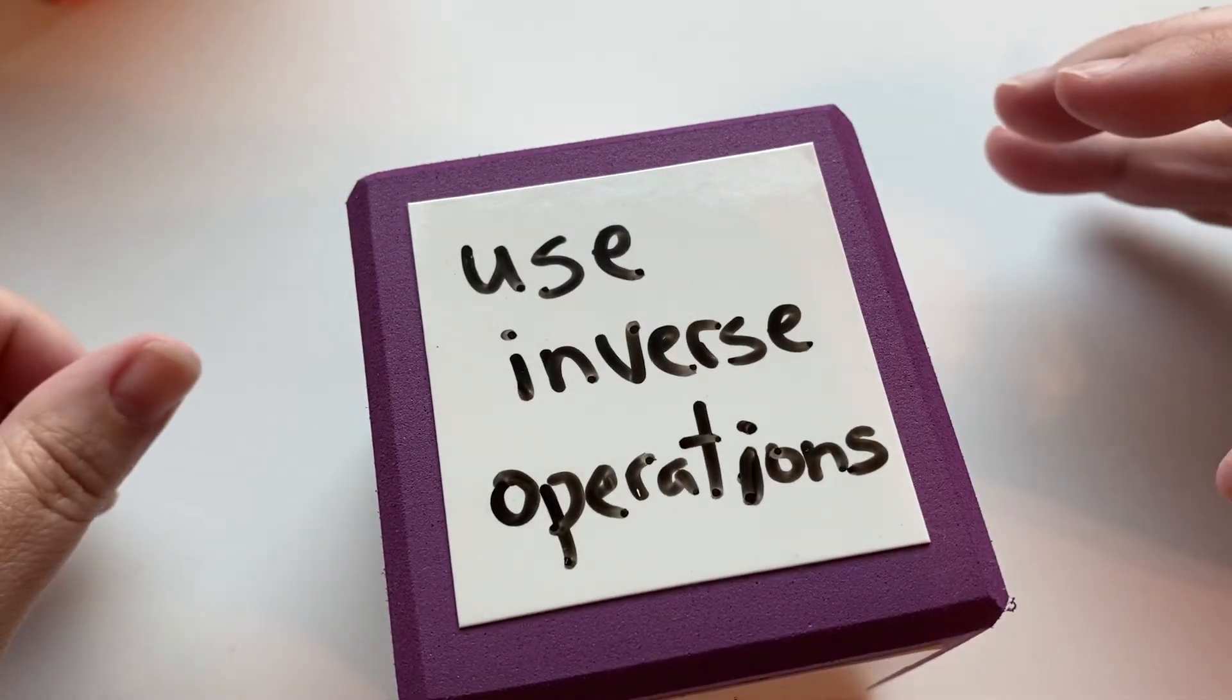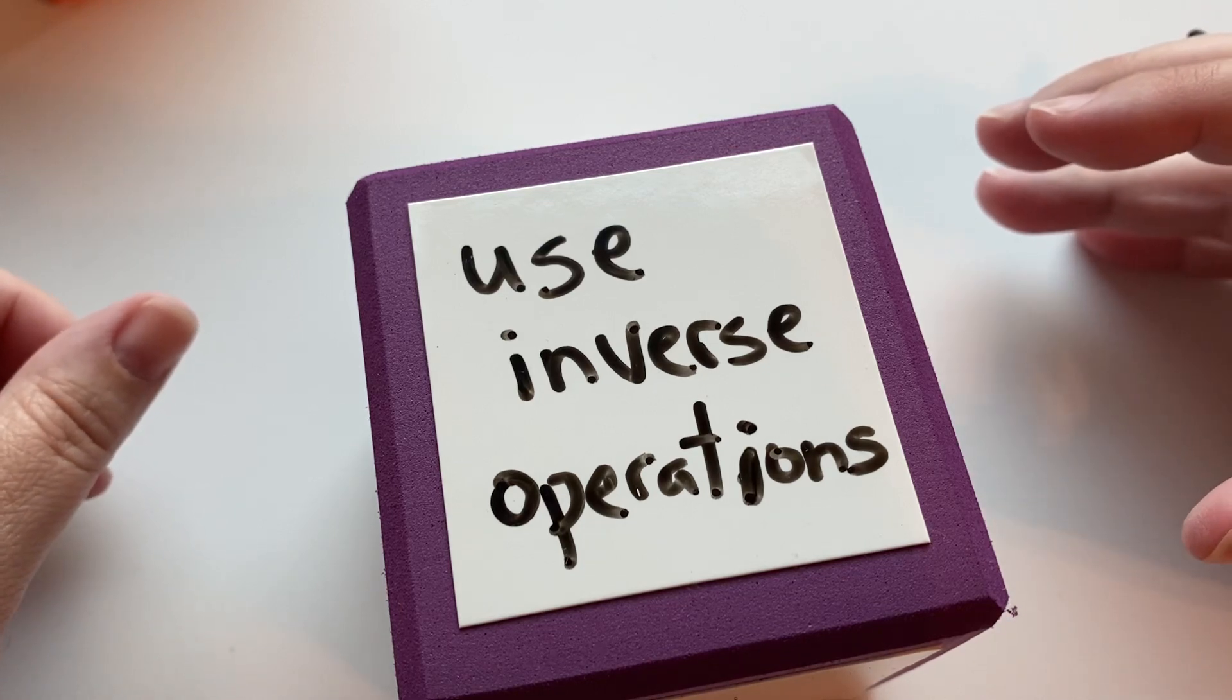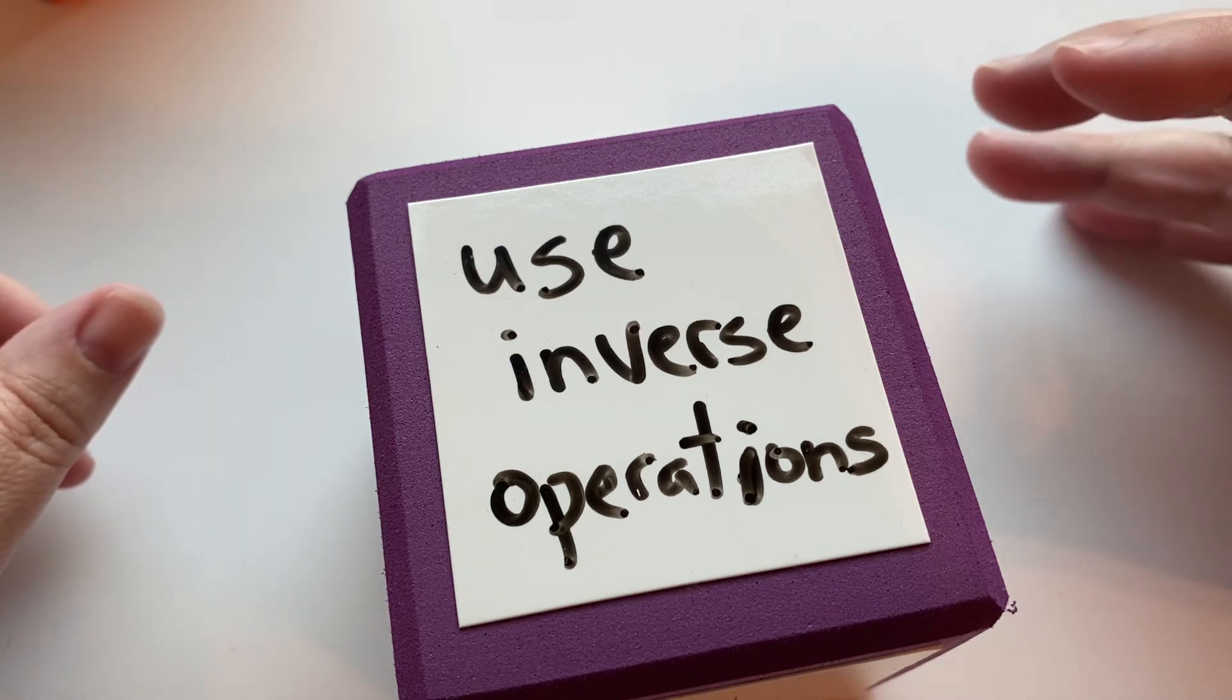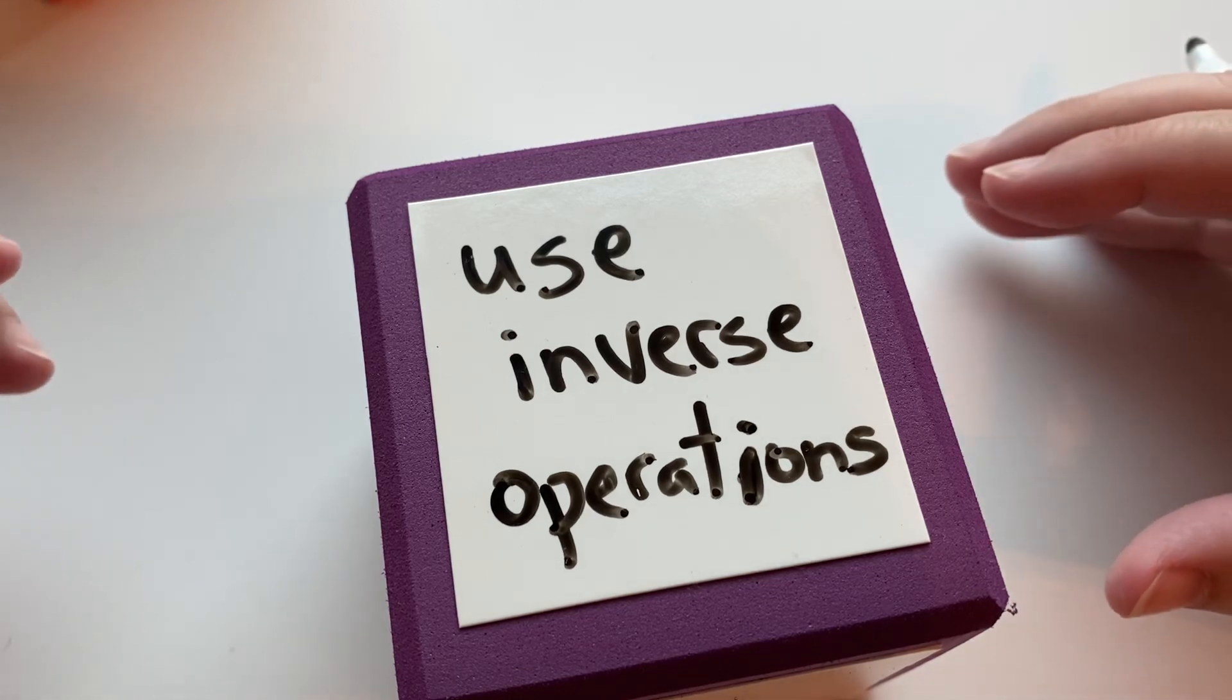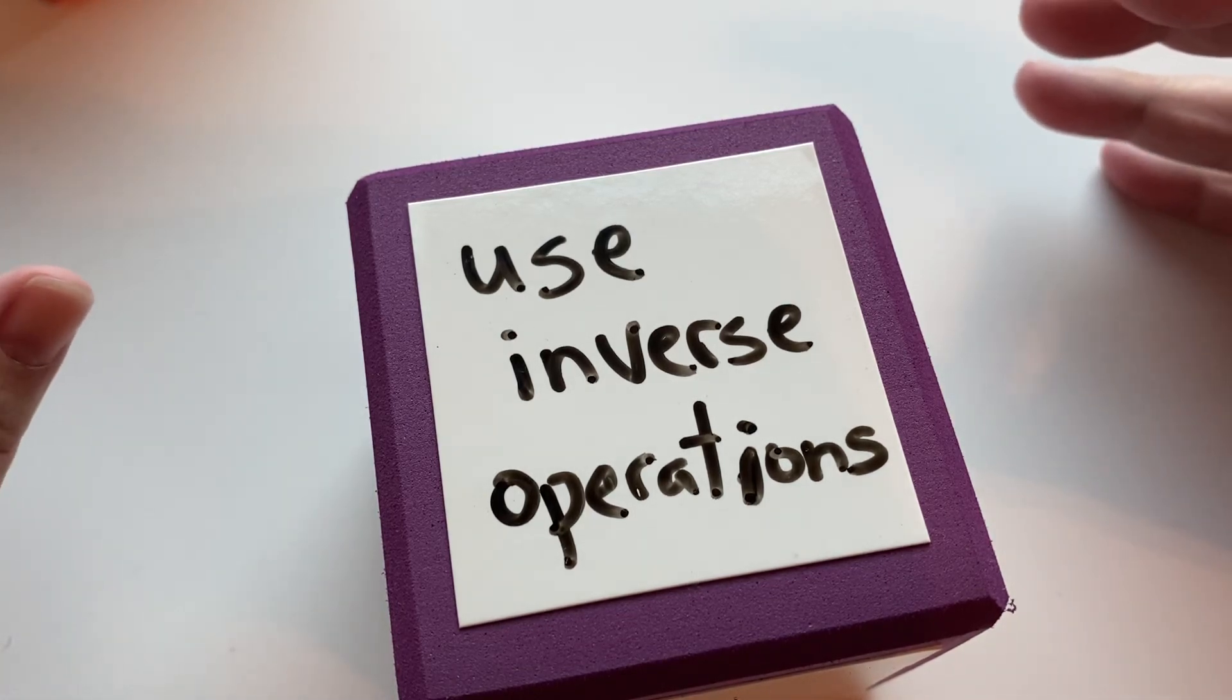We go through the equation to solve for the variable. What we do is we use the inverse operation. I look at it as like a puzzle. If you do this, then you can do this. There's different moves you can make. It's kind of like a game. Some moves are allowed, and some moves would not be allowed.